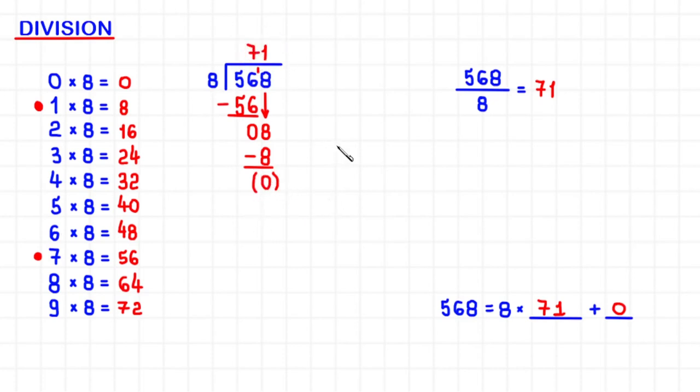To check and see if we did this division correctly, we can multiply the divisor and the whole quotient, get the product, and then add the remainder. By doing so, we are supposed to find a number equal to the dividend if everything was done correctly.